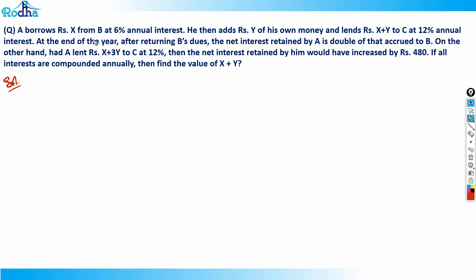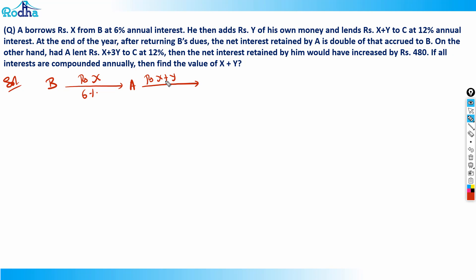So B has given rupees X to A at 6 percent interest. A then adds rupees Y of his own money, so now A is giving rupees X plus Y to C at 12 percent annual interest.